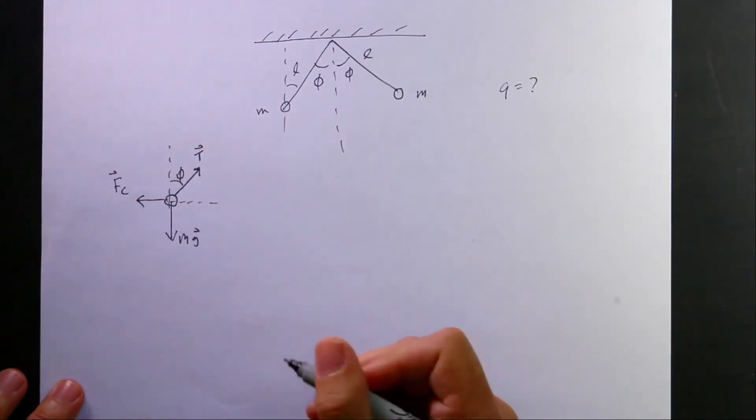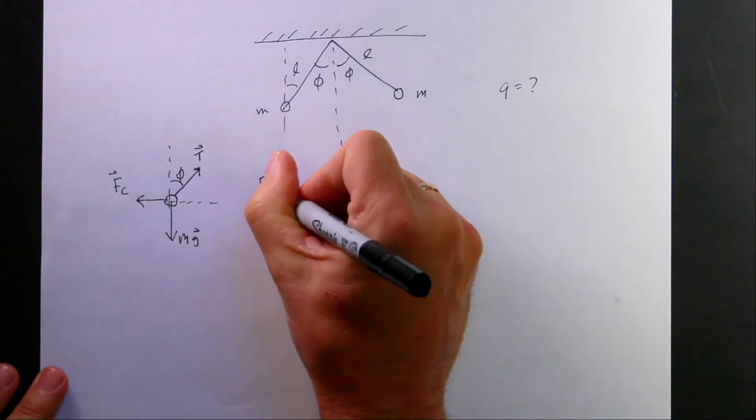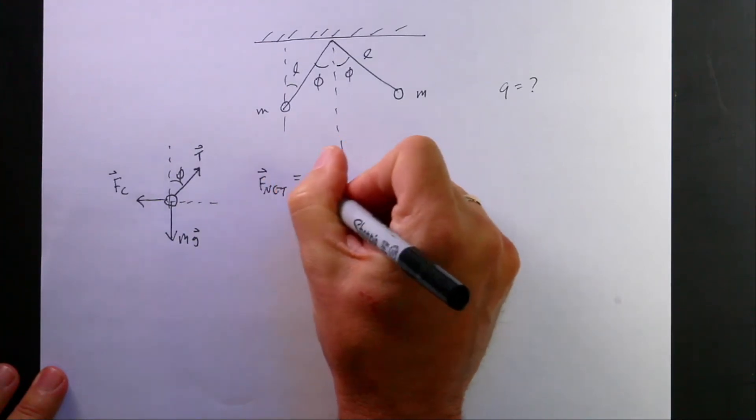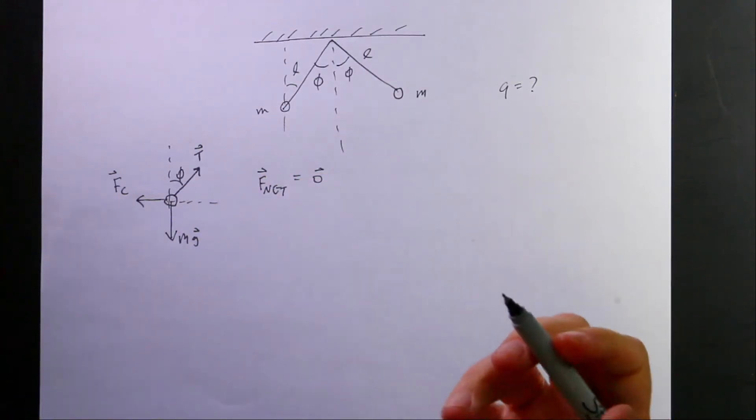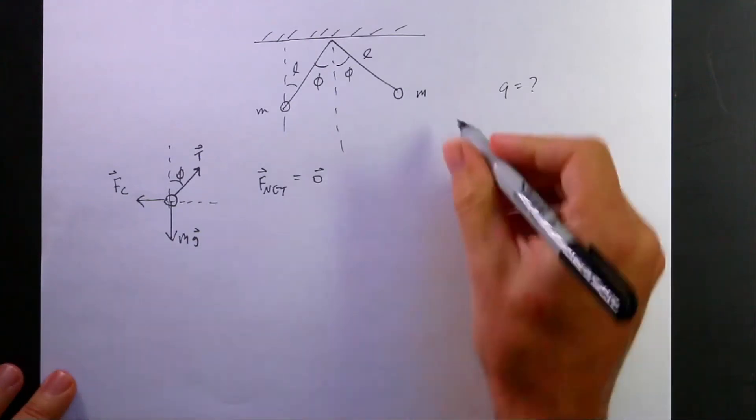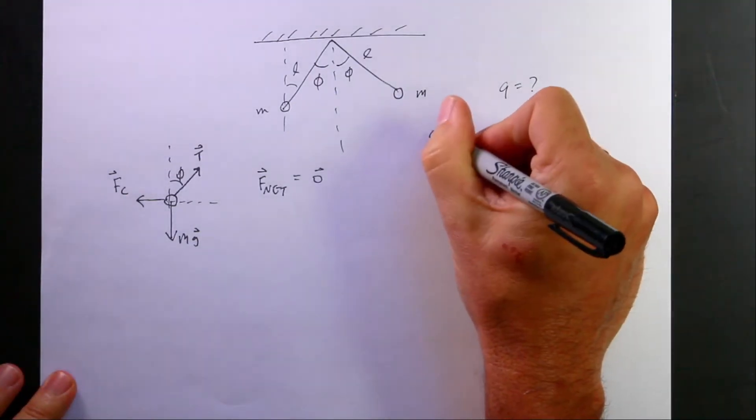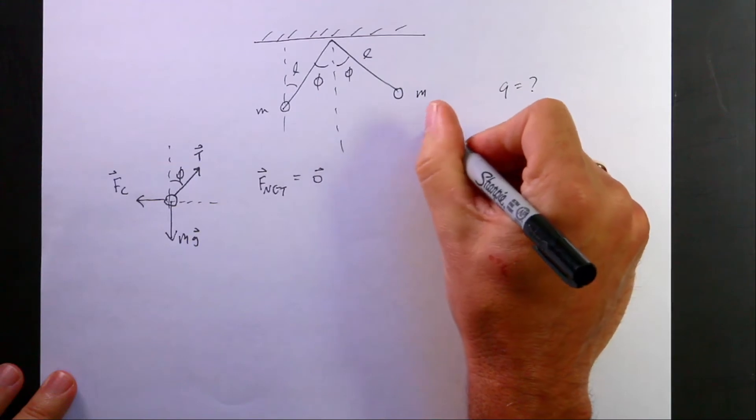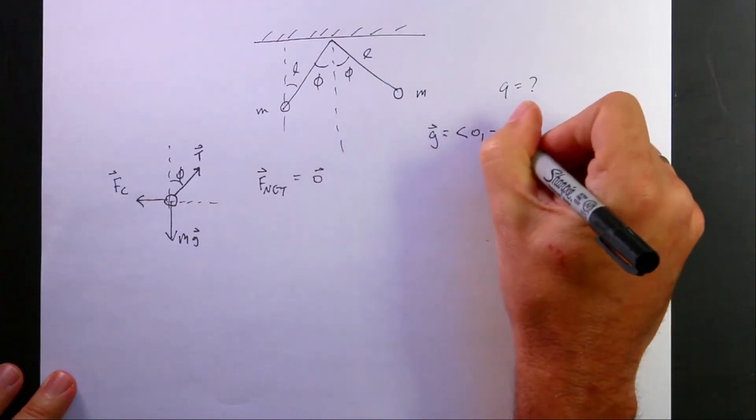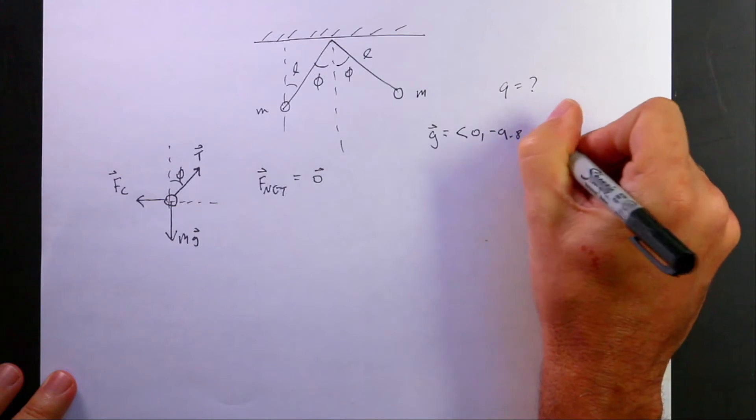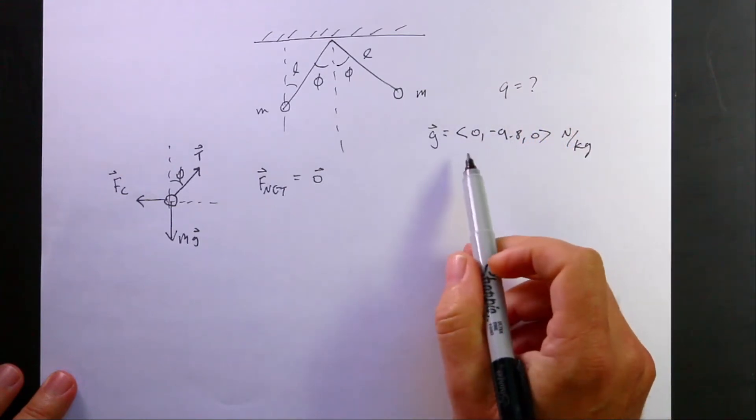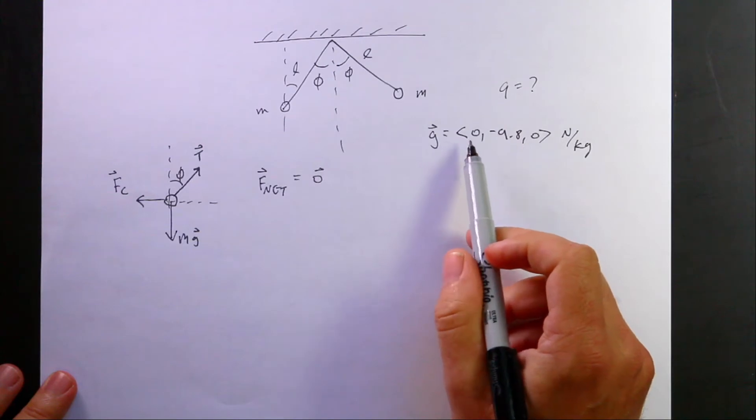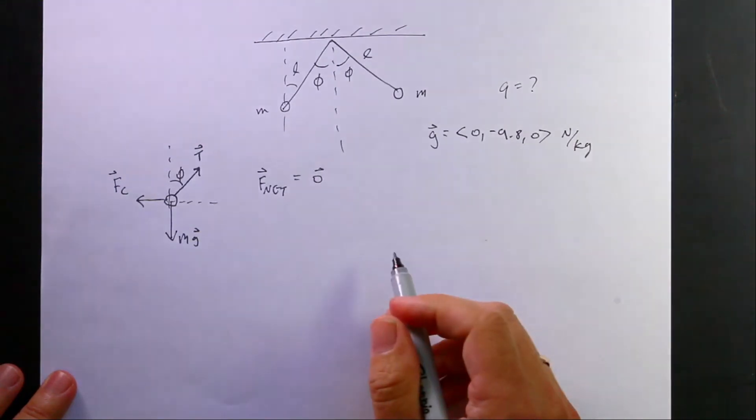And if this is an equilibrium, then I can say F net, the total vector force, is equal to zero, the zero vector. Which means it adds up in both the x and the y direction separately. Okay, so we know the gravitational force is mg where g is a gravitational field. It has a value of zero, negative 9.8, zero newtons per kilogram. And I'm using this notation where it's just the x, y, and z components for a vector.